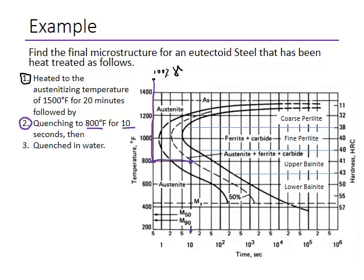We are close enough to the 50% transformation mark, so this results in 50% upper bainite with a hardness of 41 HRC. All the remaining material continues to be 50% austenite.